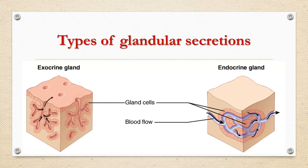While endocrine gland, also known as ductless glands, refers to the secretion of a substance called a hormone into the bloodstream and transported through circulation to act on a distant target tissue, for example pituitary gland, pancreas, etc.